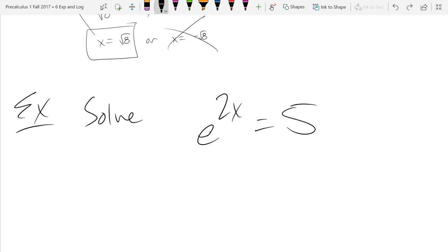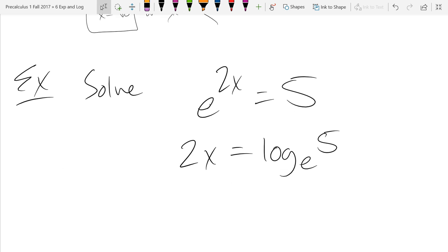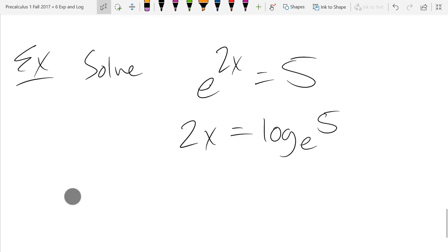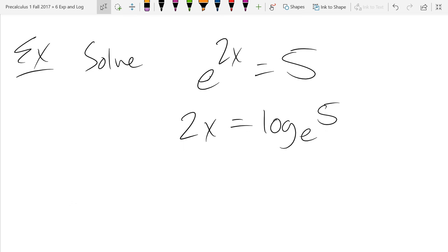So I'm going to rewrite it as the exponent equals log base e of 5. I use the definition of the log here. I believe the other problems we generally got out of the log form into exponentials. This time we're going to intentionally go into the log form. What's the last step to solve for x?